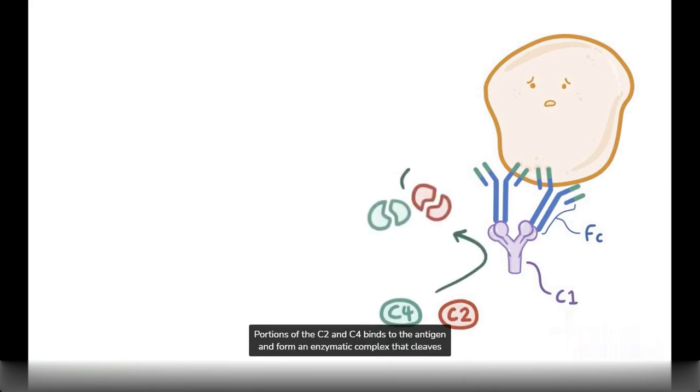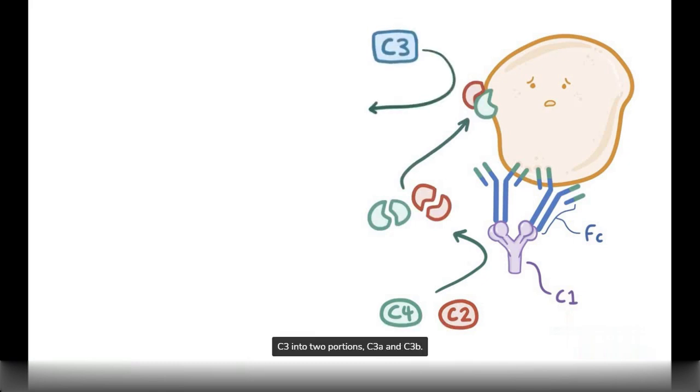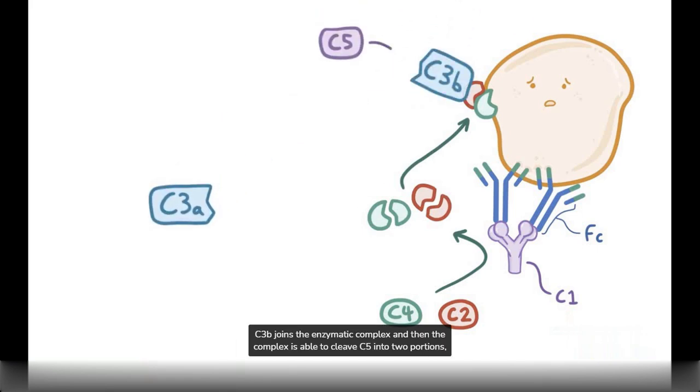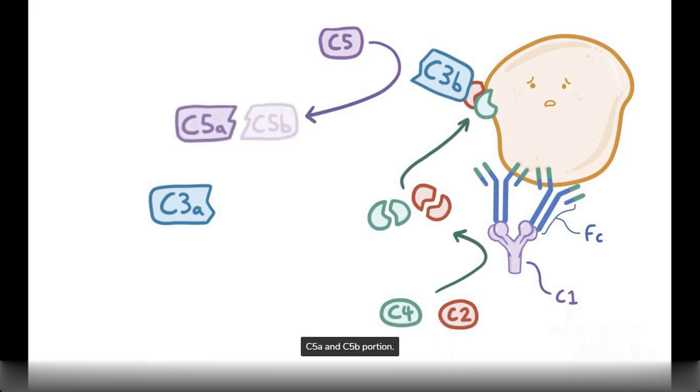C1 then cleaves C2 and C4. Portions of C2 and C4 bind to the antigen and form an enzymatic complex that cleaves C3 into two portions, C3a and C3b. C3b joins the enzymatic complex and then the complex is able to cleave C5 into two portions, C5a and C5b portion.